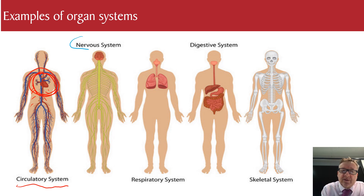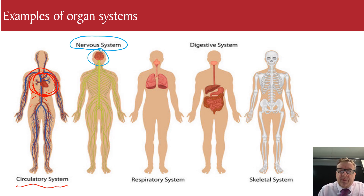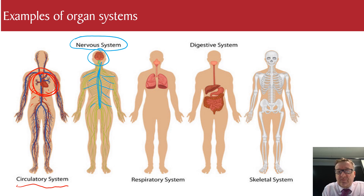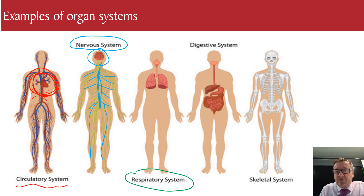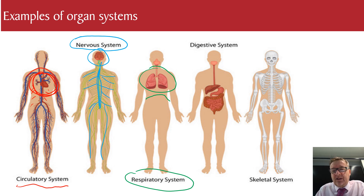The third organ system is the respiratory system, which is all to do with breathing. The main organ is the lungs. We've also got the diaphragm — it's not really an organ, it's more like a muscular layer. The lungs take in oxygen and give out carbon dioxide.